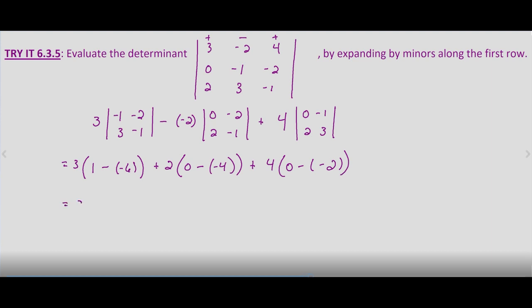And that equals 3 times 1 minus negative 6, plus 2 times 0 minus negative 4, which is 4, plus 4 times 0 minus negative 2, that becomes plus 2, so 0 plus 2 is 2.